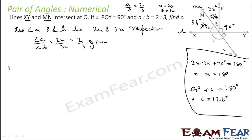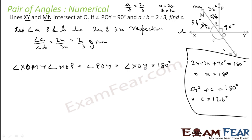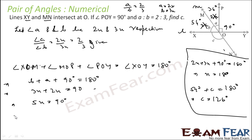We can write: angle XOM + angle MOP + angle POY = angle XOY = 180 degrees (straight line). Substituting: B + A + 90 = 180, so 3x + 2x = 90, giving 5x = 90, and therefore x = 18 degrees.